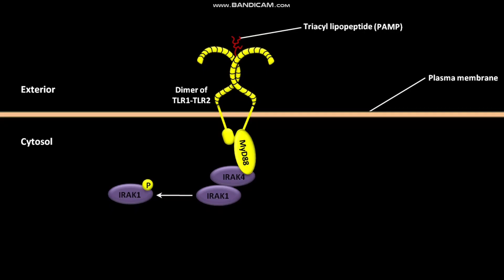TRAF6 then binds to the phosphorylated IRAK1 and activates it. TRAF6 creates a scaffold that acts as an organizing center for subsequent signaling components.